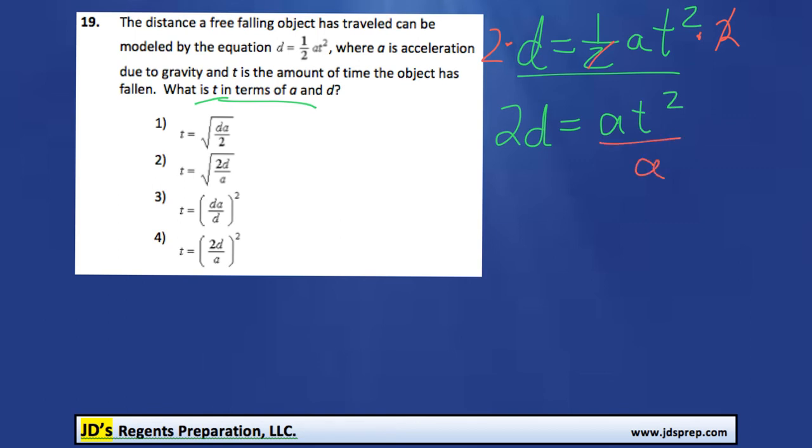Next good thing to do would be to divide both sides by a, and that'll cause those to cancel out. So we'll get 2d over a equals t squared.